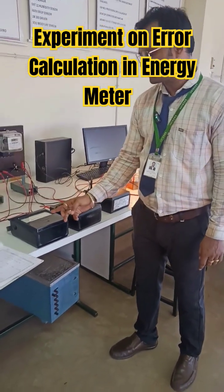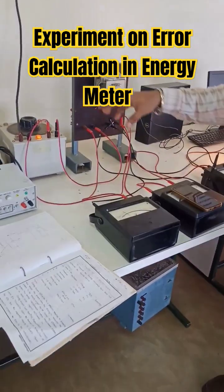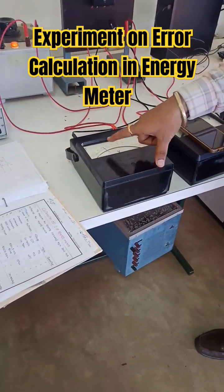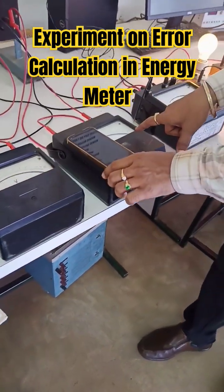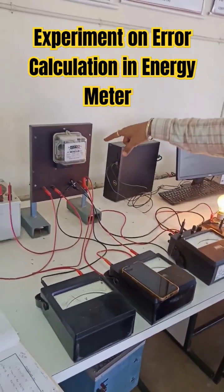First, you have to check the voltage. By adjusting the auto transformer, we have to write down the voltage reading and corresponding current reading and corresponding power reading. You have to calculate for two revolutions.